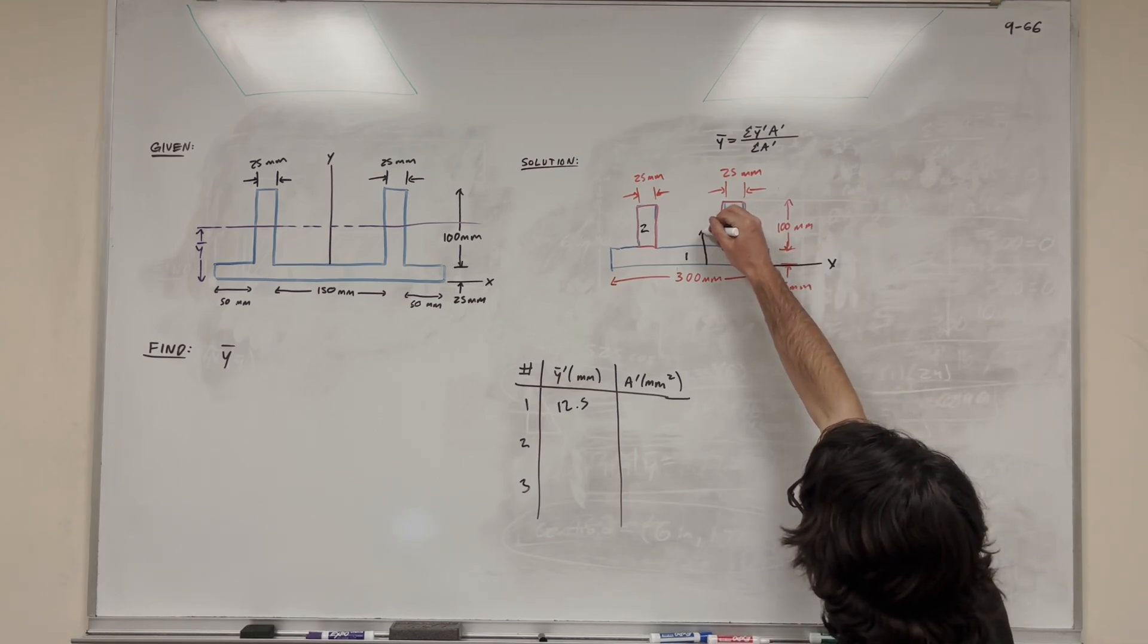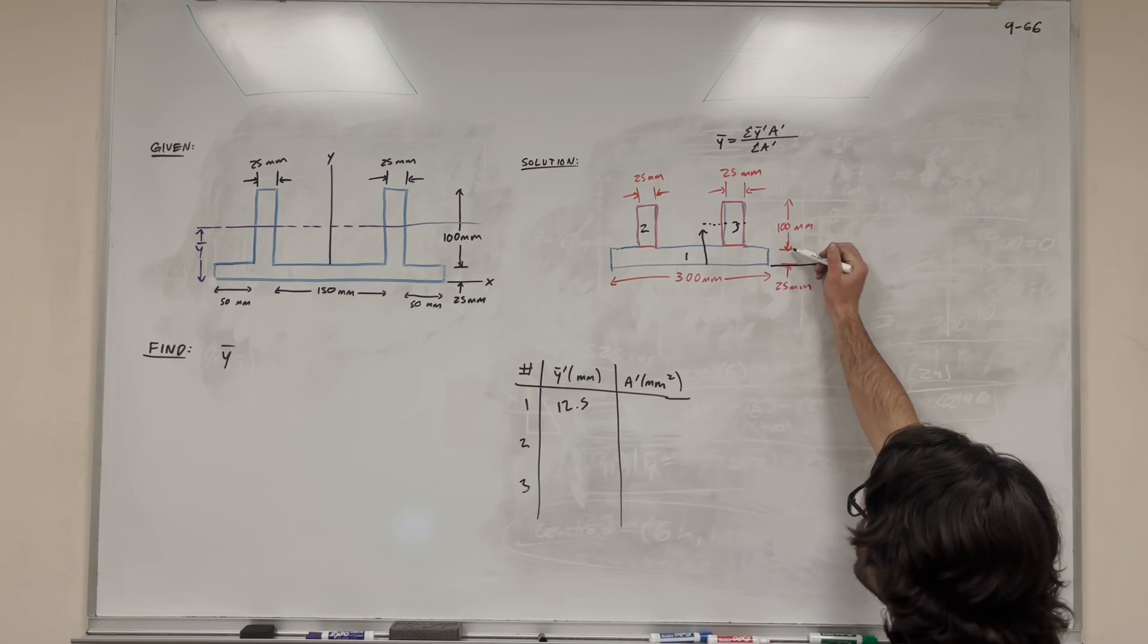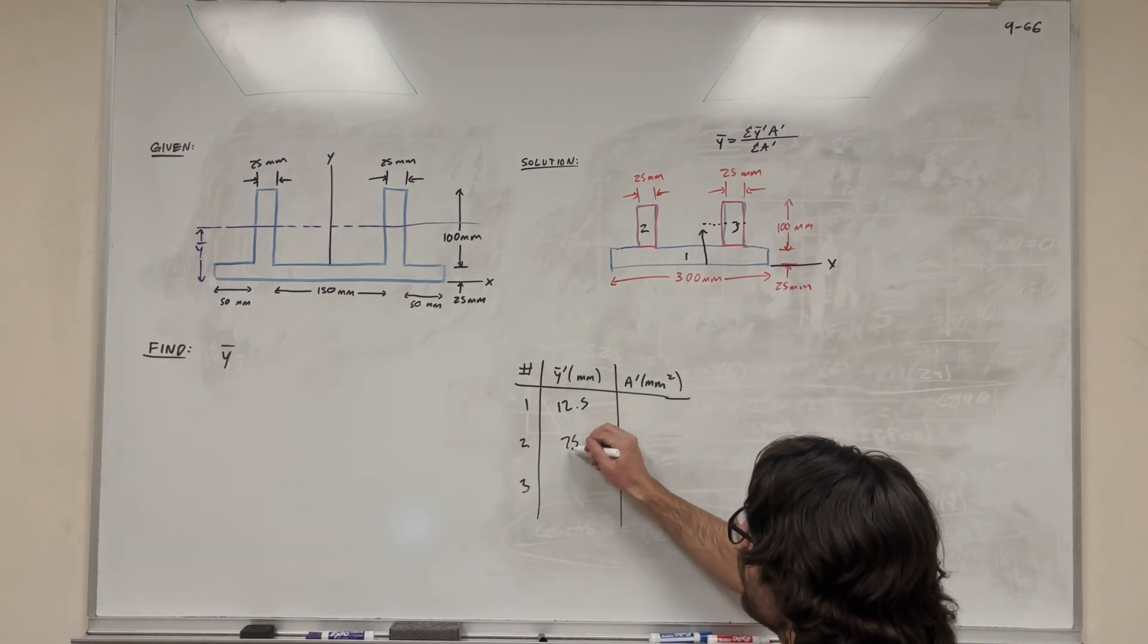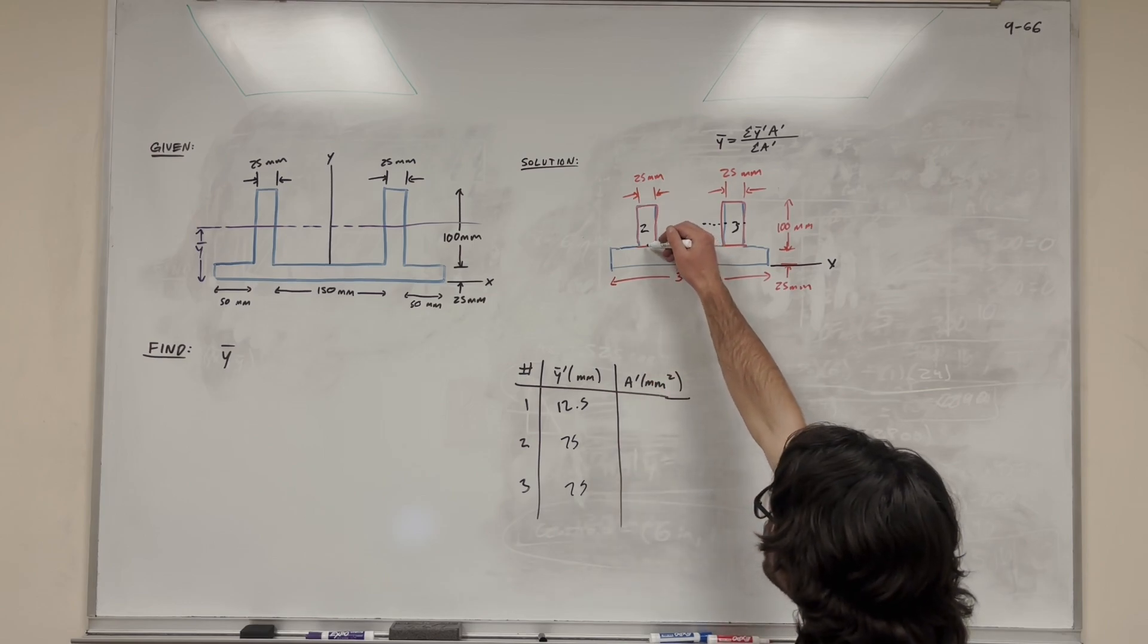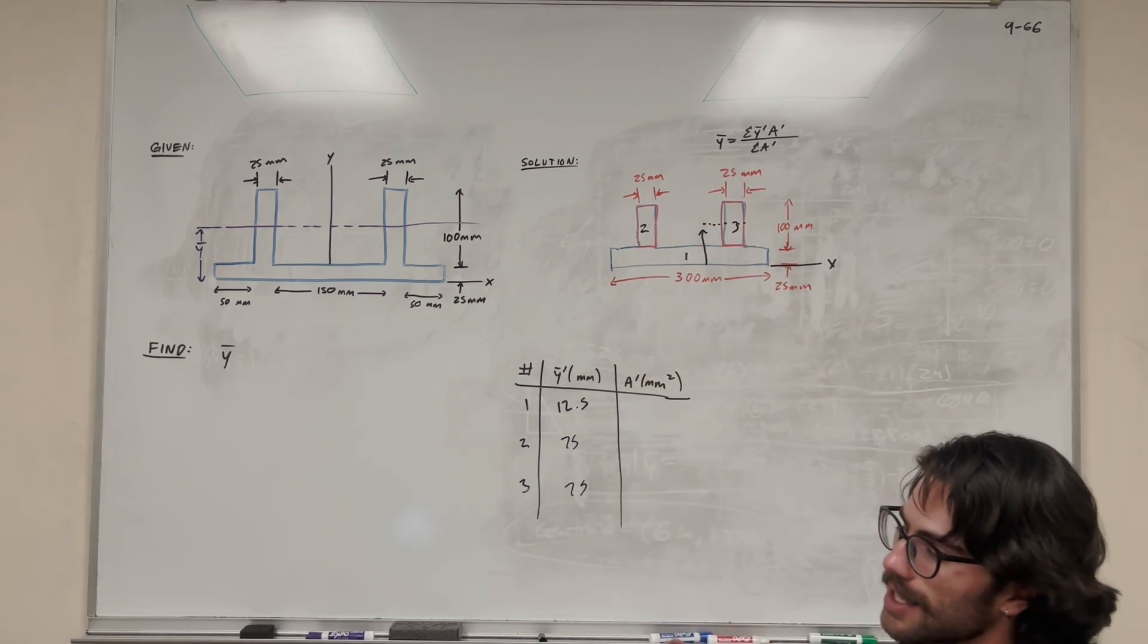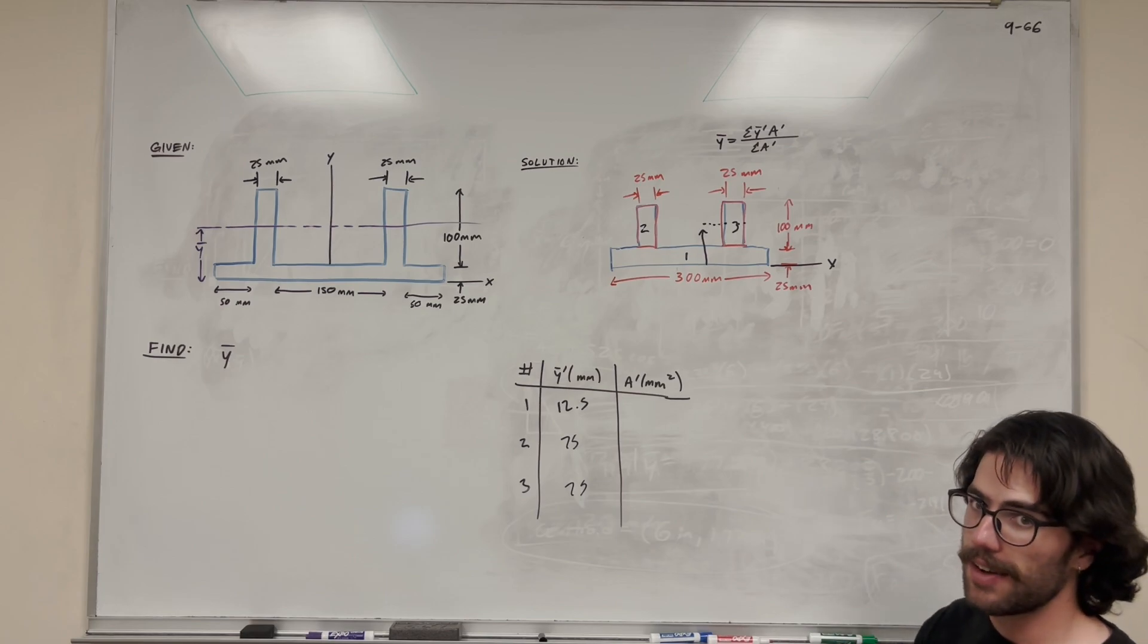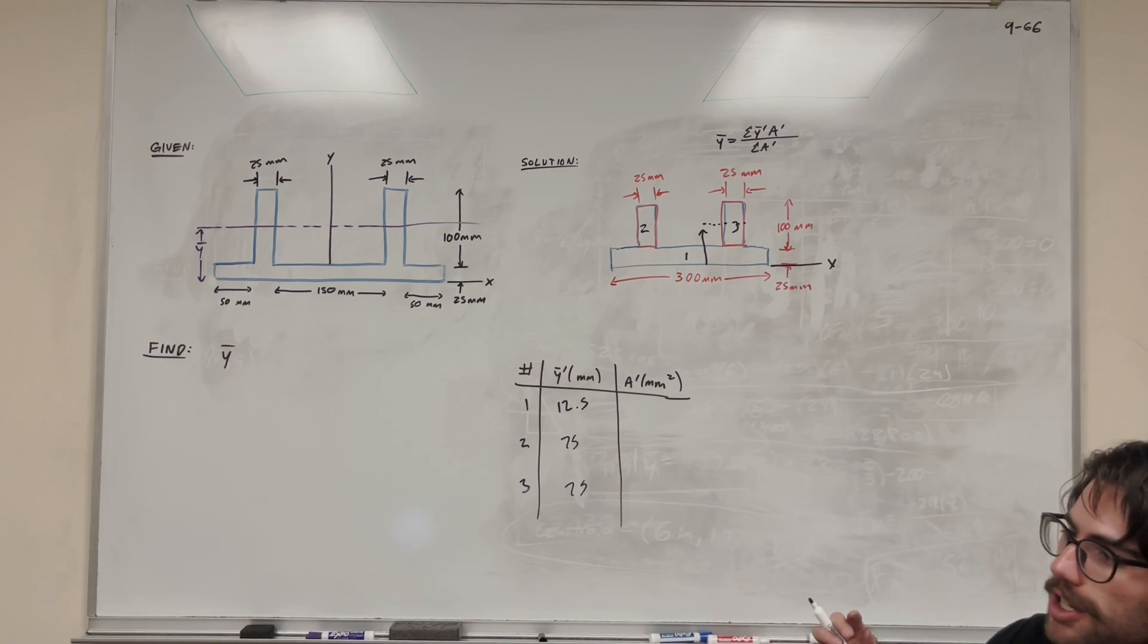So y bar prime is going to be more like this, so it's a shape from 25 millimeters plus half of a hundred. So these are actually going to be 75 millimeters for these two rectangles because they're both the same height. So that's why we find y bar is not 50, it's 75—you have to account for the extra height.